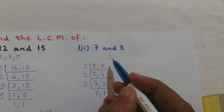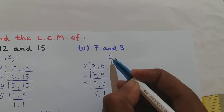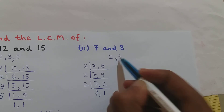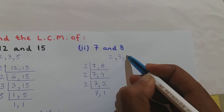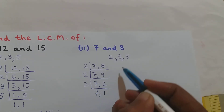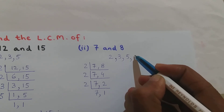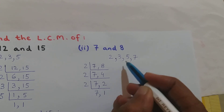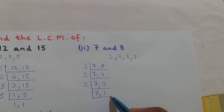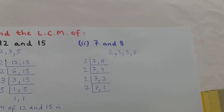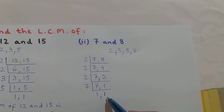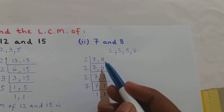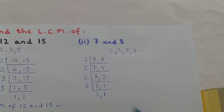7 is not divisible by 3. The next prime number after 3 is 5, and 7 is not divisible by 5. The next prime number after 5 is 7, and 7 is divisible by 7, so I will write 7 here. 7 divided by 7 is 1. We have now converted both 7 and 8 to 1, so the task is complete.